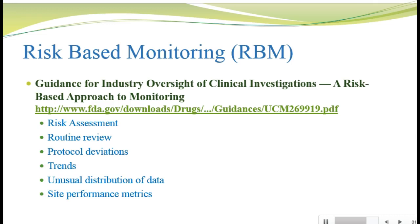Also review for protocol deviations that may indicate systemic or significant errors at the site, and review for trends and ranges, consistency, and completeness of data. Review for unusual distribution of data within and between sites, such as too little variance, or data that's too clean or too dirty — all of which can indicate duplication or falsification of patient data. Review site performance metrics: high screen failures, high withdrawal rates, high error rates. Also look for metrics that are too good, which again can indicate that patient data is being fabricated.